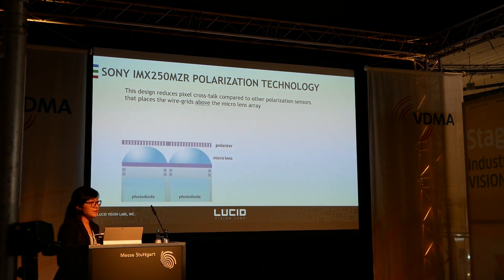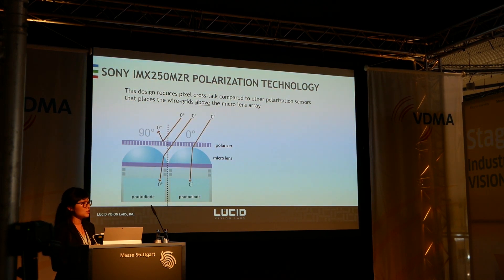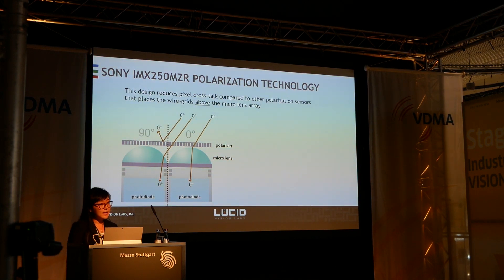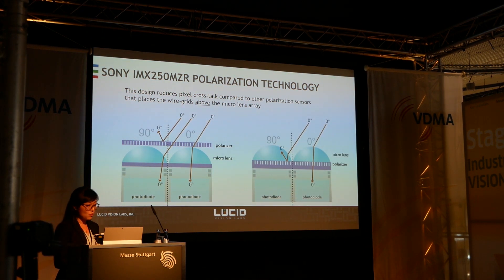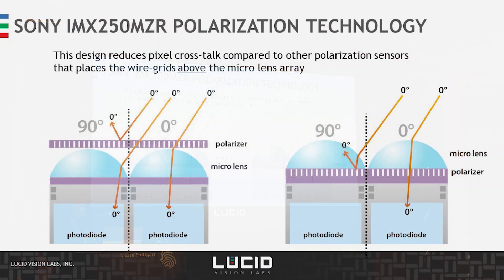On a traditional polarization sensor, the polarization filter is typically added after the sensor package is complete, so the polarizer would fall on top of the micro lens. In this case, when you have zero-degree polarization light hitting the sensor, there's a chance the light would enter at an angle, passing through the zero-degree filter and getting absorbed by the photodiode under the 90-degree pixel, giving a false reading of 90-degree polarized light. On the Sony technology, because the wire grid is beneath the micro lens, when zero-degree polarization light hits the micro lens and encounters the wire grid polarizer, it will get rejected as it's supposed to be.